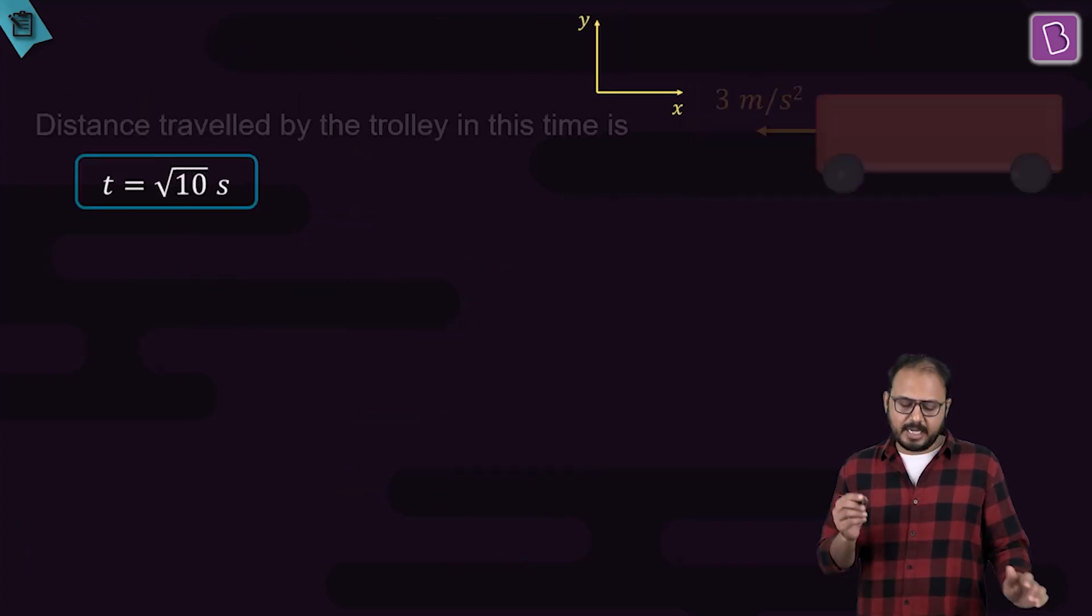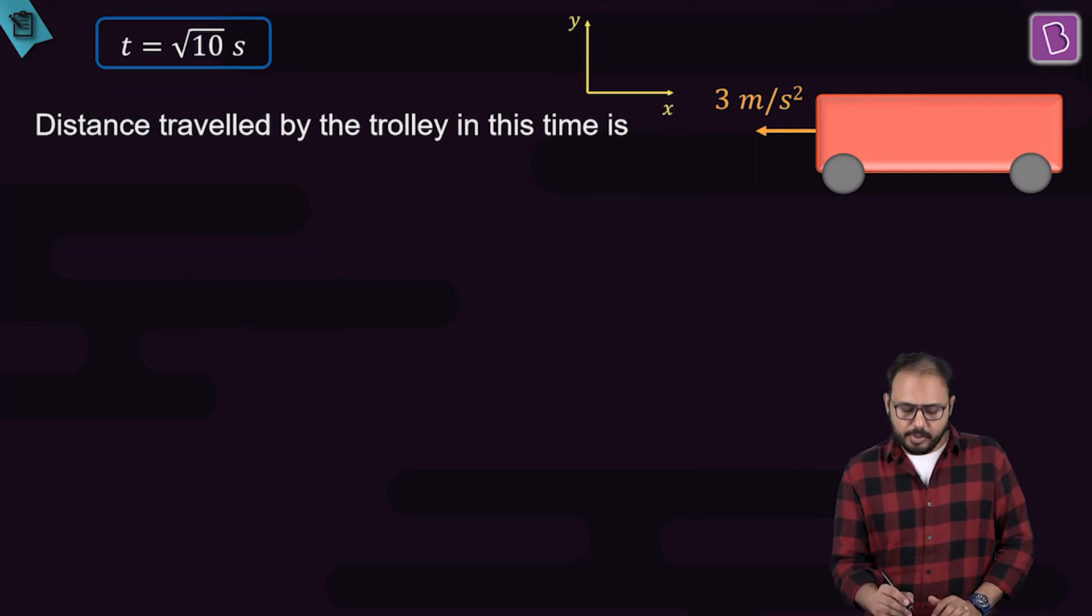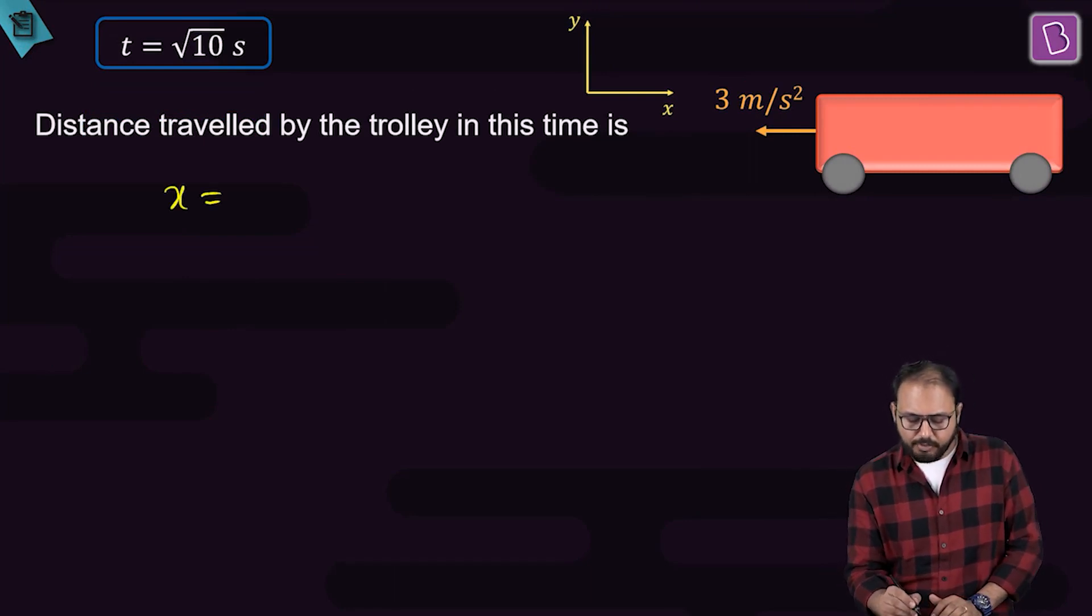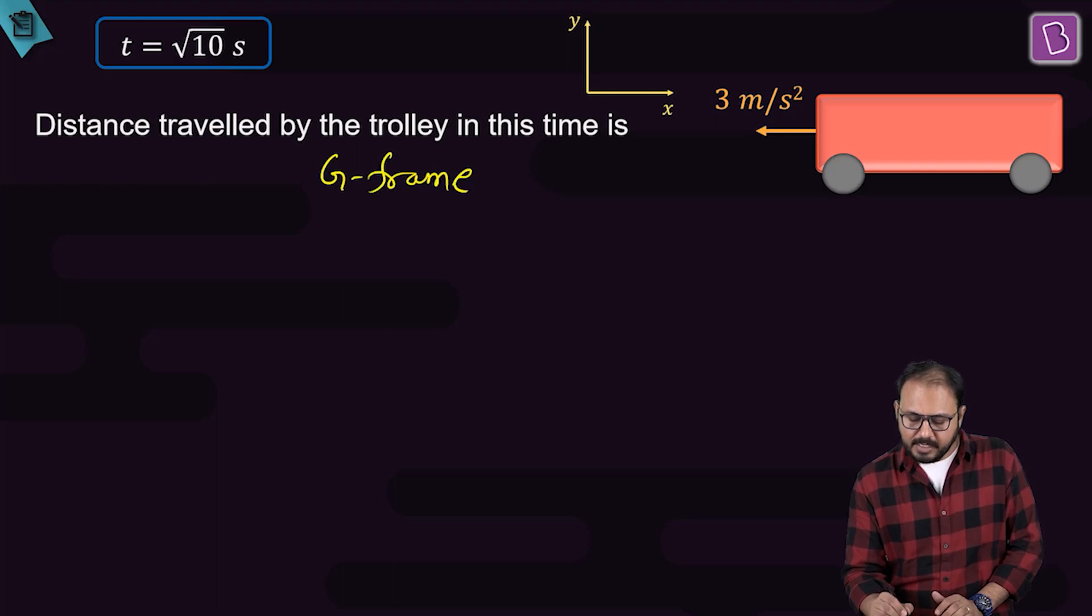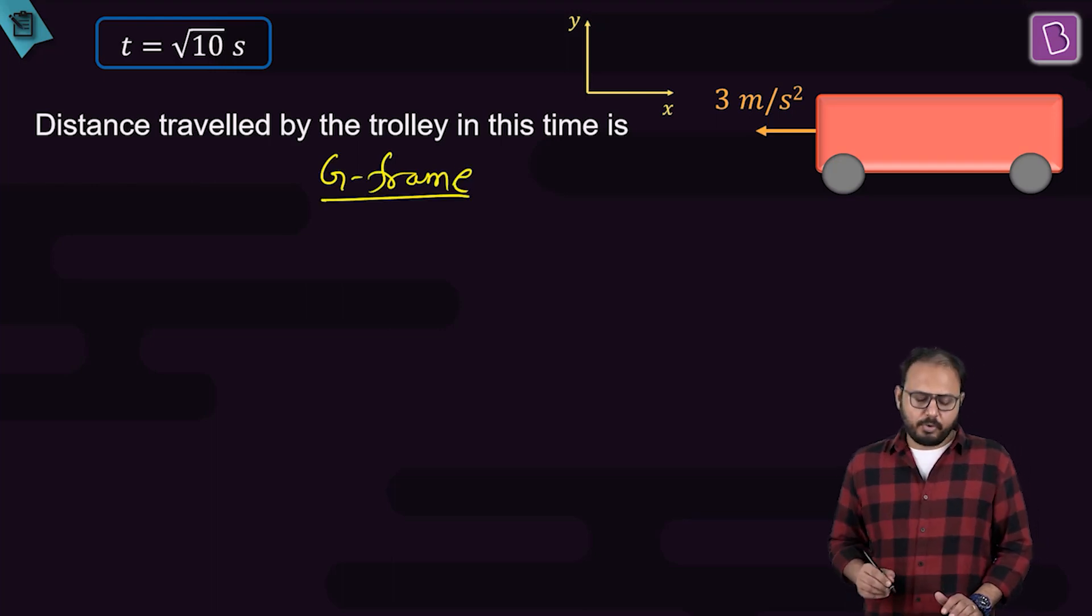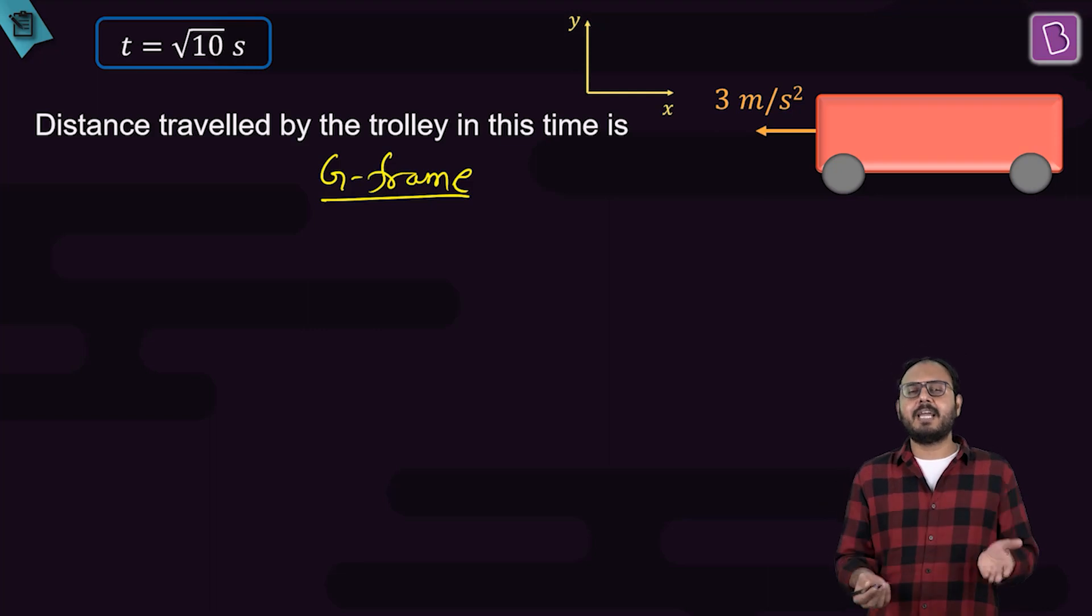You need to find out how much should the trolley traveled in this root 10 seconds. That's very simple again. This time, apply x equal to ut plus half at square on the trolley. Look at the trolley but what frame you are in now? Ground frame. But sir, you found out root 10 seconds in trolley frame. Why will you use that value of time in ground frame? For the 100th time, time does not depend on the frame.